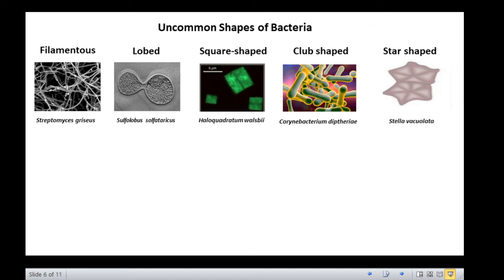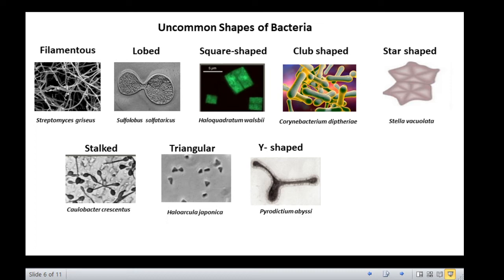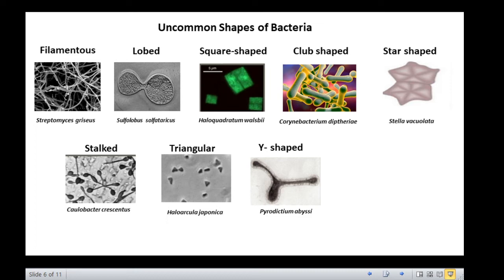Some bacteria have a stalk for attachment to substratum, the example of which is Caulobacter crescentus. Bacteria can also be triangular and Y-shaped. The examples of which are Haloarcula japonica and Pyrodictium abyssi. Further, bacteria can be pleomorphic, which means that they show variable shapes and sizes in response to changing environmental conditions. They can be rod-shaped in a particular environment, and in the next moment, they can turn to cocci. Examples of pleomorphic bacteria are Mycoplasma pneumoniae and Rickettsia prowazekii.